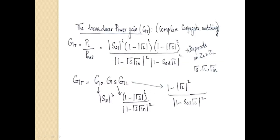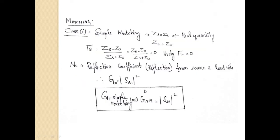Based on this, the overall gain we are getting is |S21|². G0 equals |S21|² and is independent of γS and γL. With γS = 0, GS = 1. With γL = 0, GL = 1. So the overall transducer gain GT = G0 = |S21|². If a question asks for the maximum gain by simple matching approach, the answer is |S21|².